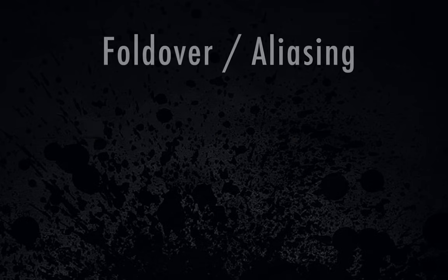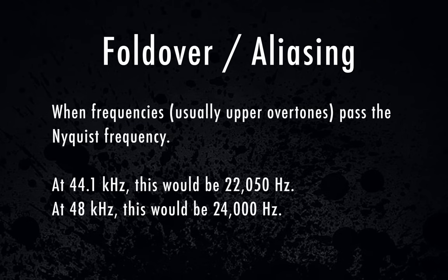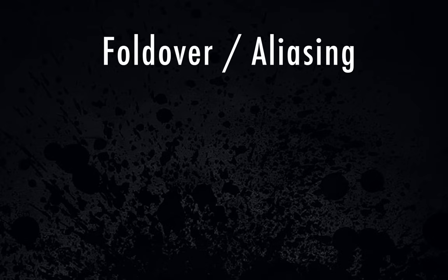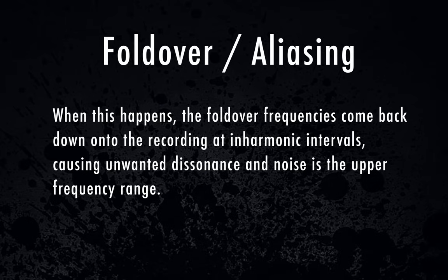Another thing to consider is called foldover or aliasing. Aliasing is when upper harmonics in a recording pass your Nyquist frequency. So let's say you're recording a piccolo or a flute — a really high-pitched instrument — and its upper overtones pass the threshold of 22,050 Hz at a sample rate of 44,100. When that happens, those extra frequencies have to go somewhere in the digital reproduction of the waveform, and they fold back down onto the recording at inharmonic intervals, causing dissonance in the upper frequencies. The way to avoid this is to use a higher sample rate to increase your maximum frequency threshold.